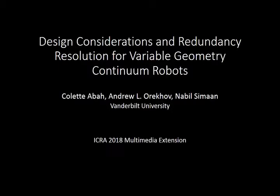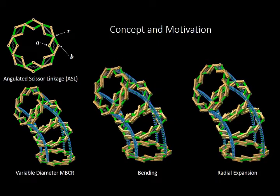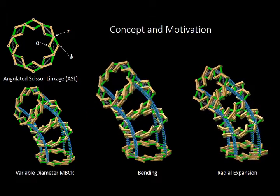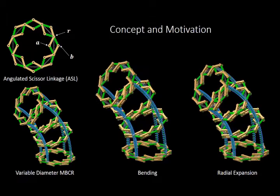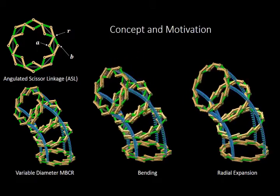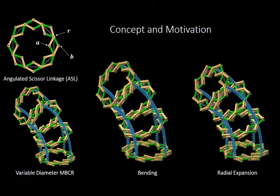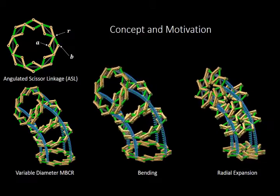This paper presents the design considerations and redundancy resolution for variable geometry continuum robots. The multi-backbone continuum robot featured in this paper is able to control its diameter actively. This is achieved by the use of angulated scissor linkages as spacer disks.